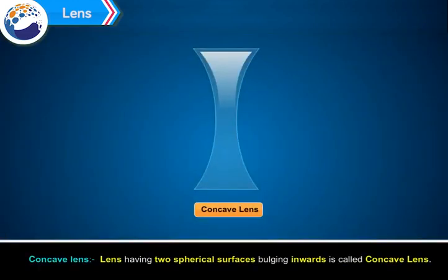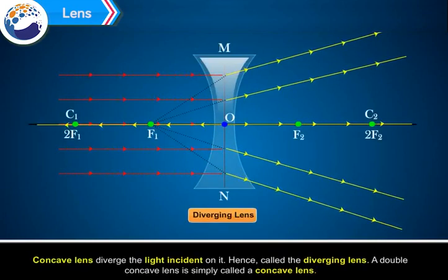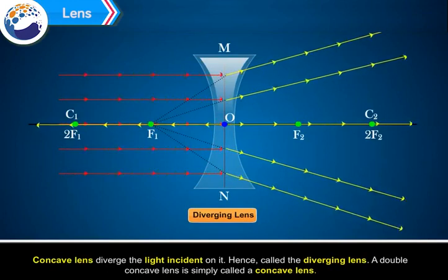It is thicker at the middle as compared to the edges. Convex lenses converge the light and hence are called converging lenses. A lens having two spherical surfaces bulging inwards is called a concave lens. It is also known as a double concave lens. It is thicker at the edges than at the middle. Concave lenses diverge the light incident on them, hence called diverging lenses.